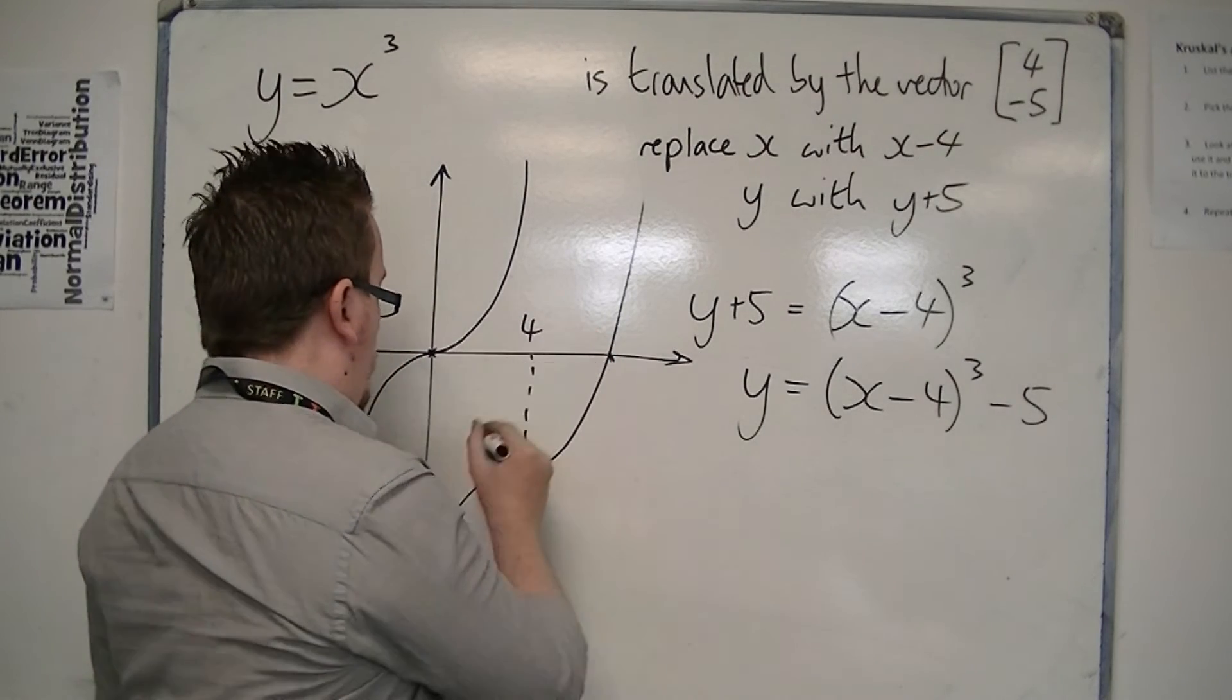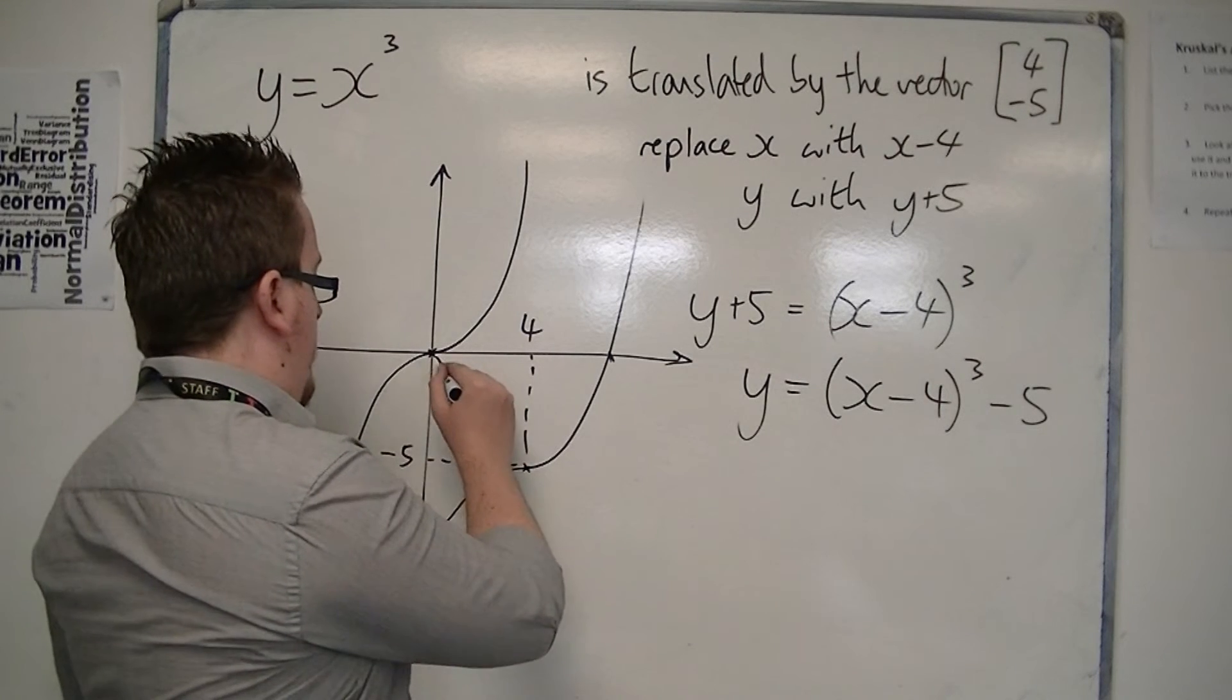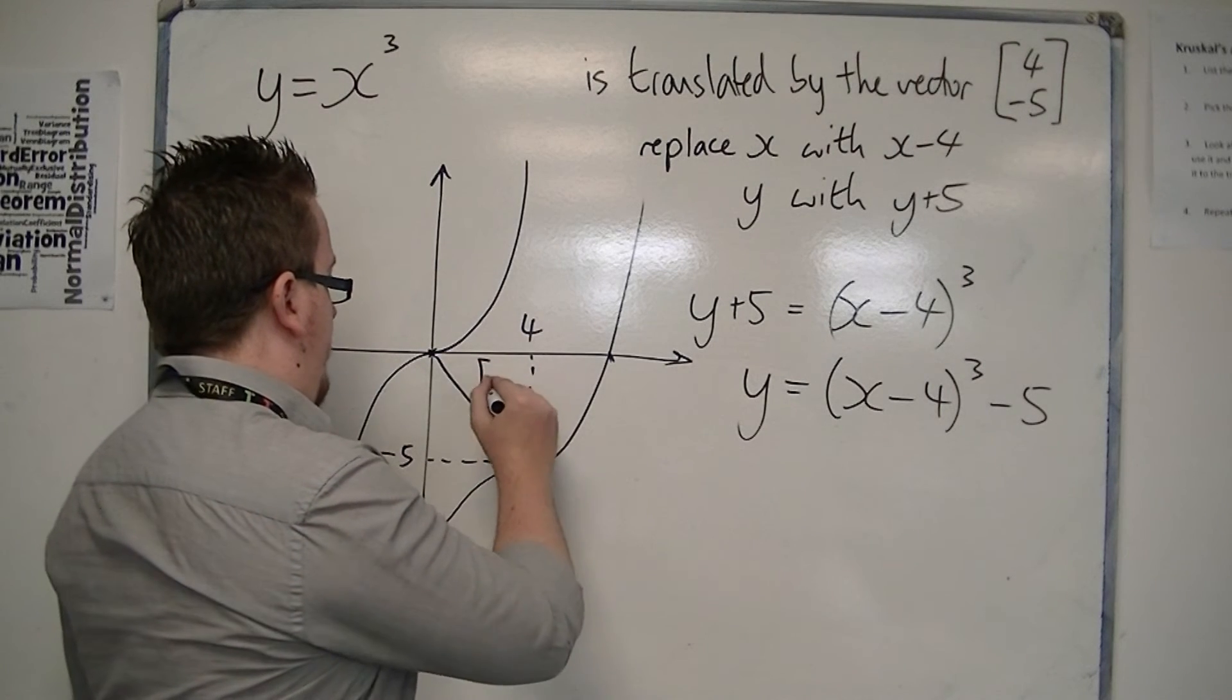So that's 4 minus 5. And that is the vector 4 minus 5.